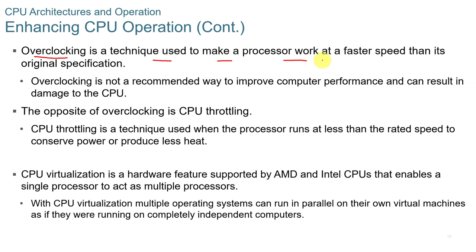There are people who overclock their systems — I've overclocked my current system. The CPU manufacturer sets a recommendation for the most stable range, and going beyond that will generate more heat, requiring better cooling. If you overclock too far, you can get unexpected results. The opposite of overclocking is throttling — a technique where the processor runs at less-than-rated speed to conserve power or produce less heat.